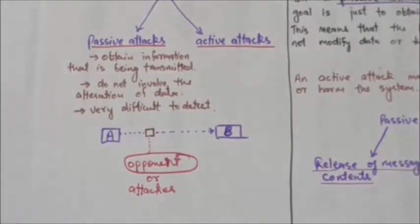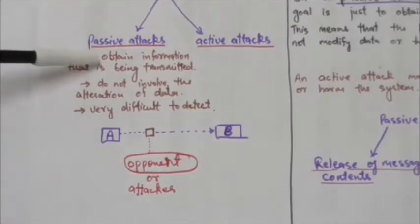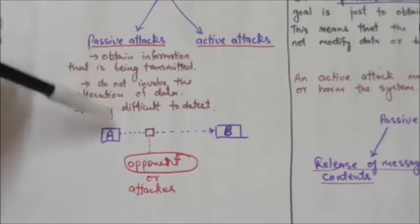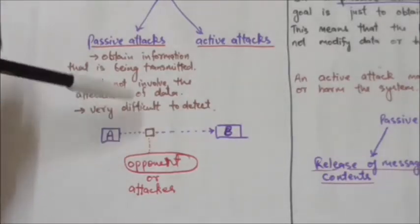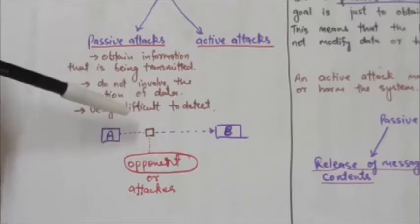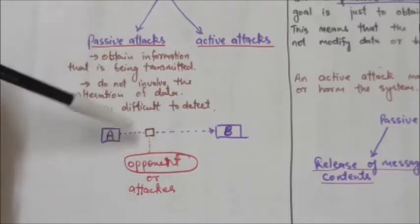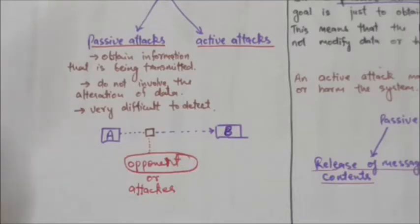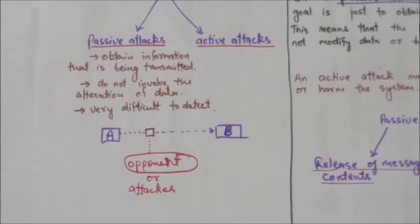In passive attacks, the goal of the opponent or attacker is to obtain the information that is being transmitted. A passive attack attempts to learn or make use of information from the system but does not affect the system resources. Passive attacks are very difficult to detect because they do not involve the change or alteration of data.